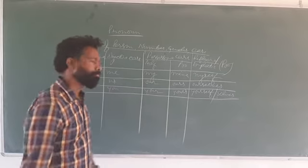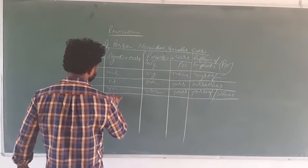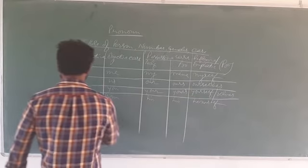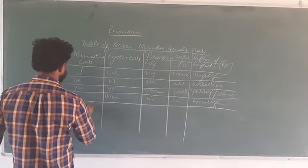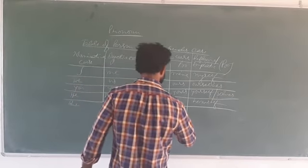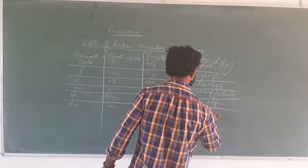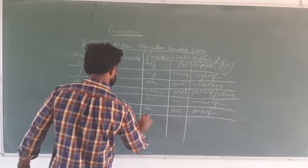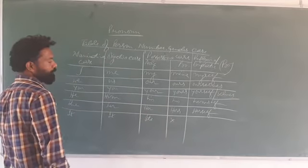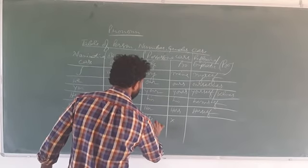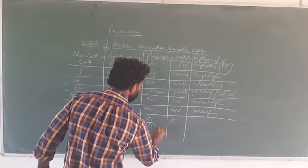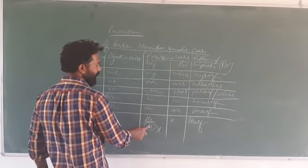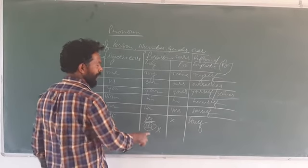Third person singular masculine: he, him, his, his, himself. Feminine: she, her, her, hers, herself. Neuter gender: it, it, its, its — and itself. Important note: when writing 'its' as a possessive, do not use an apostrophe. If you write i-t-apostrophe-s, it becomes 'it is,' which is wrong. The possessive 'its' is written without an apostrophe.